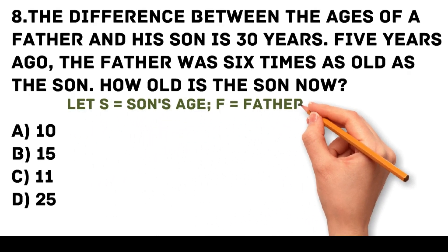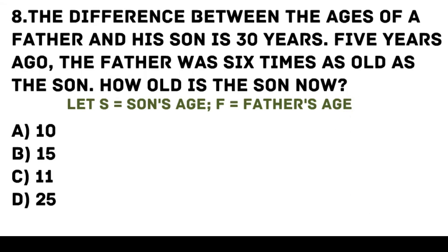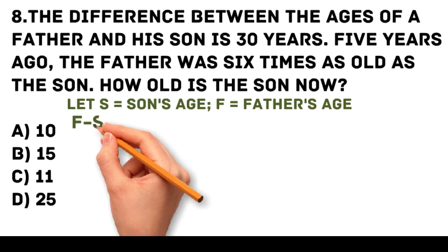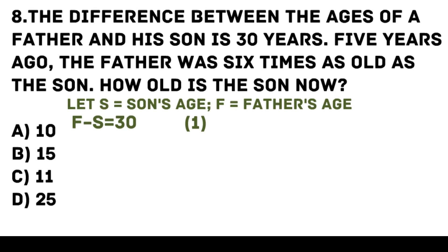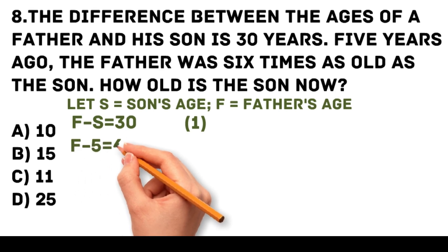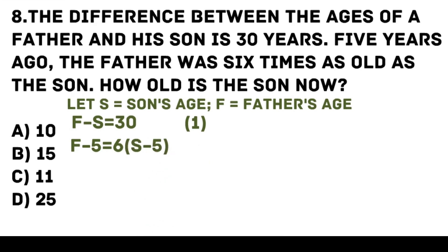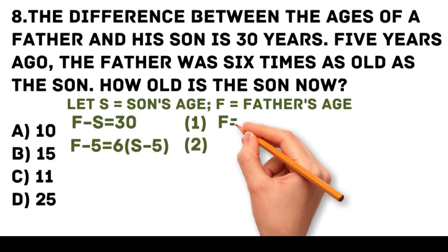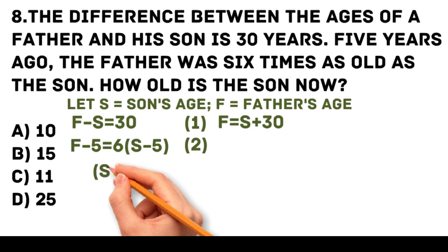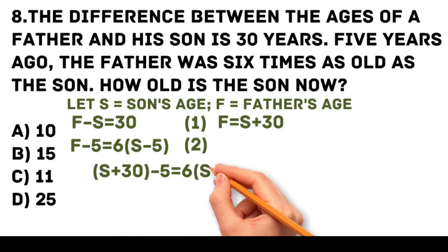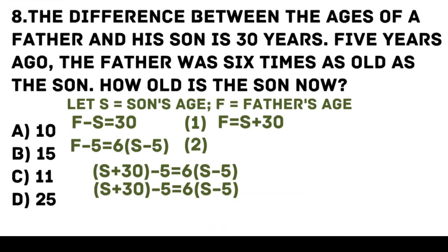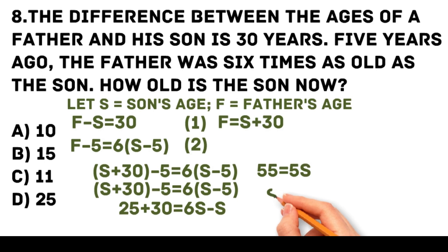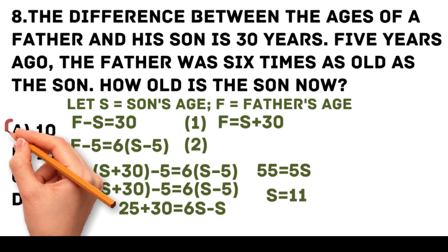Let S be the son's age and F the father's age. The difference gives F minus S equals 30 — first equation. Five years ago, the father was 6 times as old as the son: F minus 5 equals 6 times (S minus 5) — second equation. From the first equation, F equals S plus 30. Substituting: S plus 30 minus 5 equals 6 times (S minus 5). By distribution: S plus 25 equals 6S minus 30. Combining terms: 55 equals 5S, so S equals 11. The son is 11 years old.